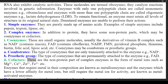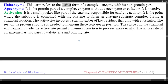(2) Cofactors — these are the non-protein part of complex enzymes in the form of metal ions such as Mg²⁺, Ca²⁺, Zn²⁺, Fe²⁺, etc. Enzymes that require metal in their composition are known as metalloenzymes, and enzymes which have a lower affinity for metal ions but still require the metal ion for activity are known as metal-activated enzymes. Holoenzyme refers to the active form of a complex enzyme with its non-protein part. Apoenzyme is the protein part of a complex enzyme without a coenzyme or cofactor — it is inactive.